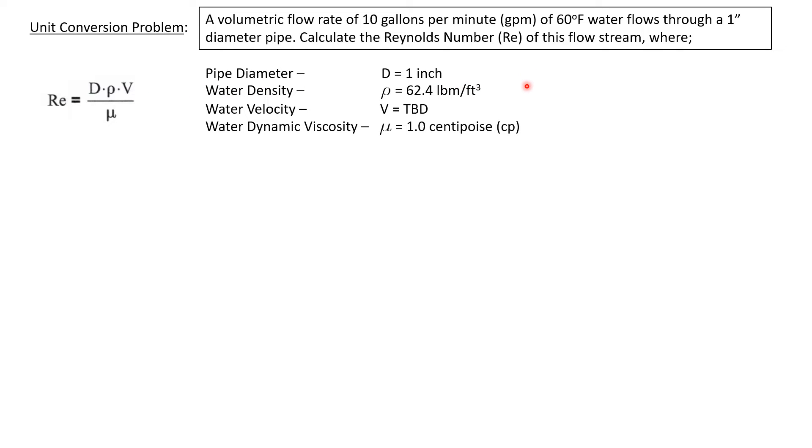We'll take the water density to be 62.4 pounds mass per cubic foot at 60 degrees Fahrenheit. The water velocity was not given, so we'll have to determine that. And at this temperature water has a dynamic viscosity of about one centipoise.